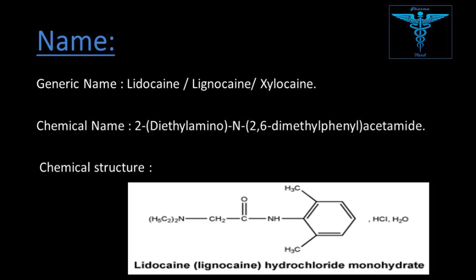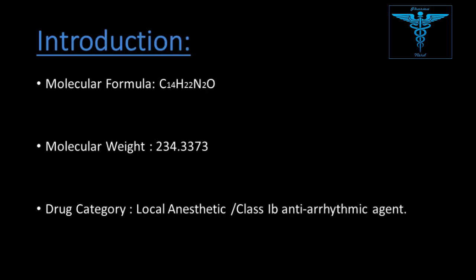This is the chemical structure of lidocaine. Chemical name: 2-diethylamino-2,6-dimethylphenylacetamide. Molecular formula: C14H22N2O. Molecular weight: 234.3373 grams per mole. Drug category: local anesthetic and class 1-B anti-arrhythmic agent.